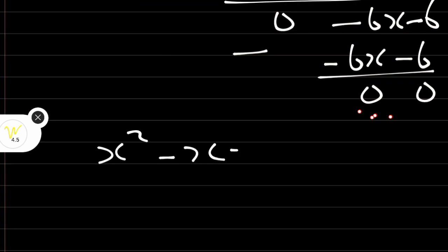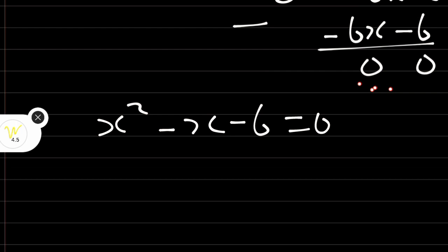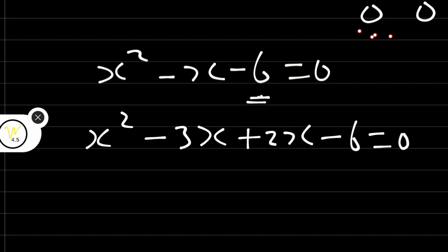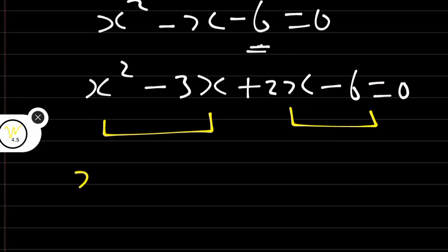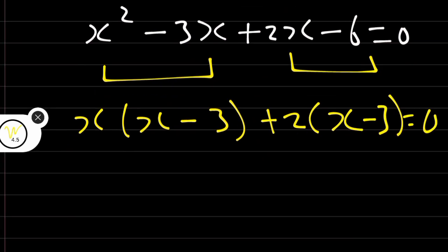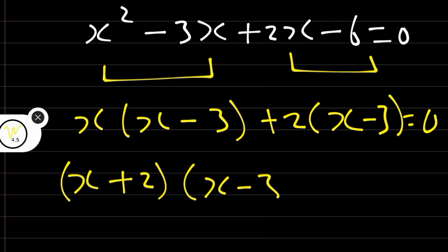Now x squared minus x minus 6 is equal to 0. We look for two numbers that can be multiplied together to get minus 6 and add together to get minus 1. Those are minus 3 and plus 2. So we write x squared minus 3x plus 2x minus 6 equal to 0. Factorizing: x minus 3 brackets with x, and 2 brackets with x minus 3, giving x plus 2 times x minus 3 is equal to 0.